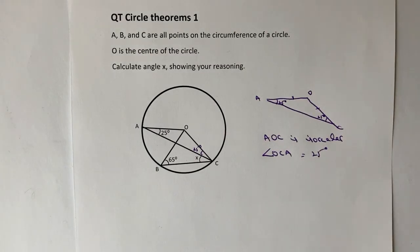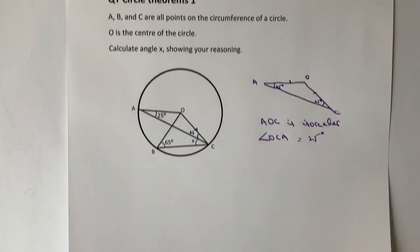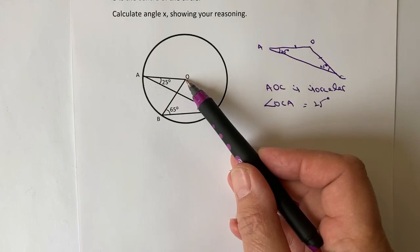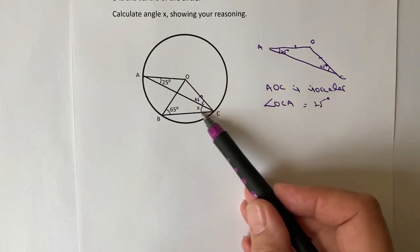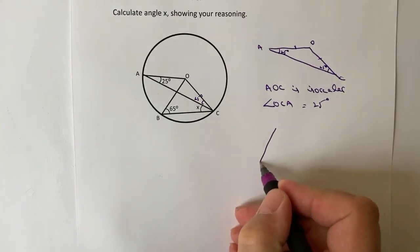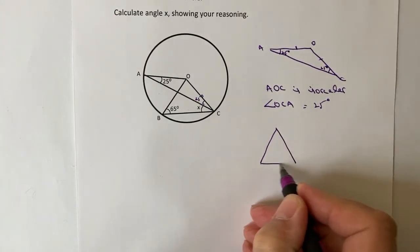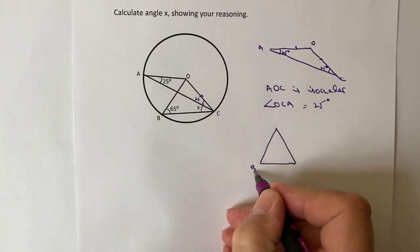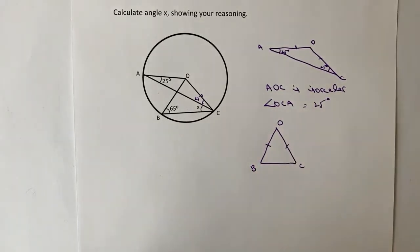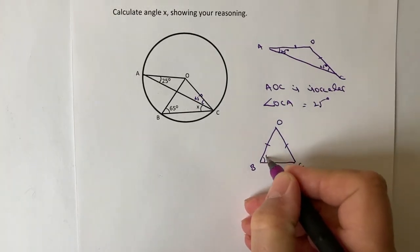The second part of it is also the isosceles triangle, which is the one which is here. So it's this one to there to there. I'll just try and draw this on the screen for you on the video. So this is B, this is O and this is C. And again, we know these two sides are the same because they're both the radius of the circle.